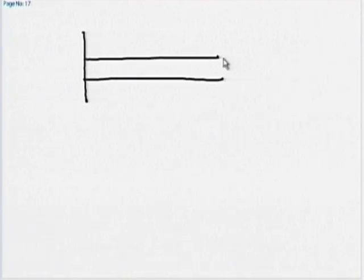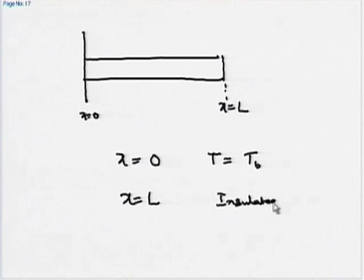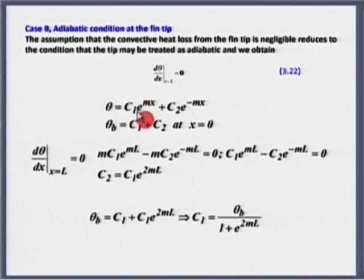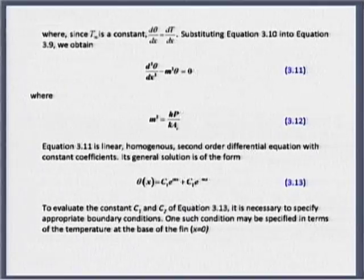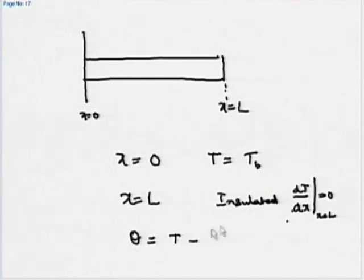The two boundary conditions are: at x = 0, T = T_b; and at x = L we take the insulated (adiabatic) boundary condition, so dT/dx = 0 at x = L. These are the two boundary conditions we are going to apply to our equation written in terms of θ. θ = C₁e^(mx) + C₂e^(−mx). For those who have lost track: θ = T − T∞.